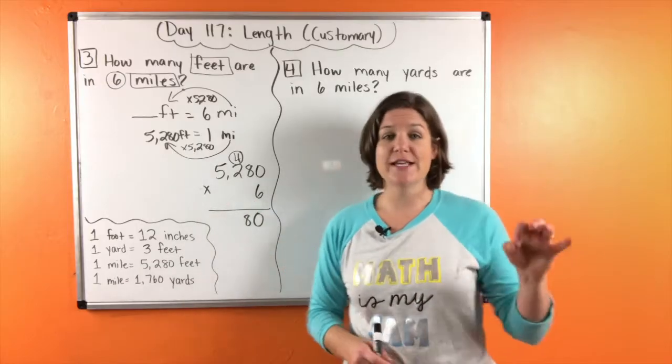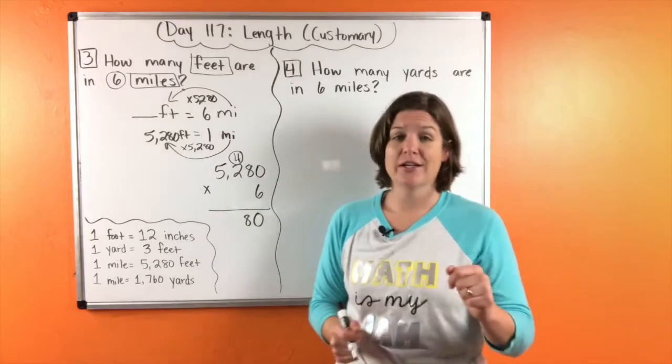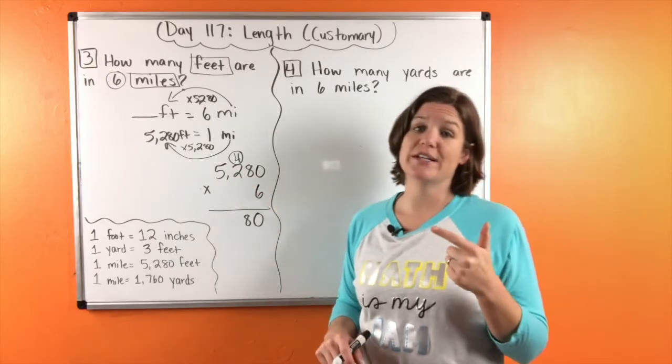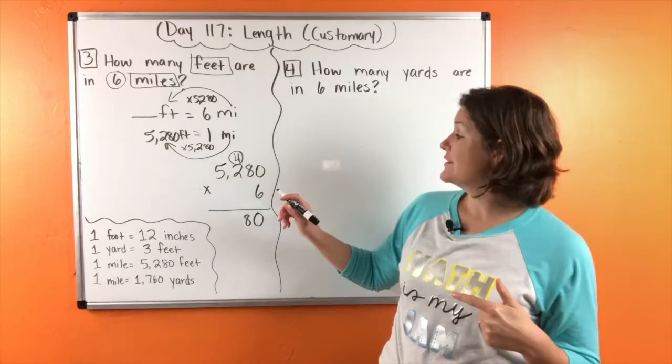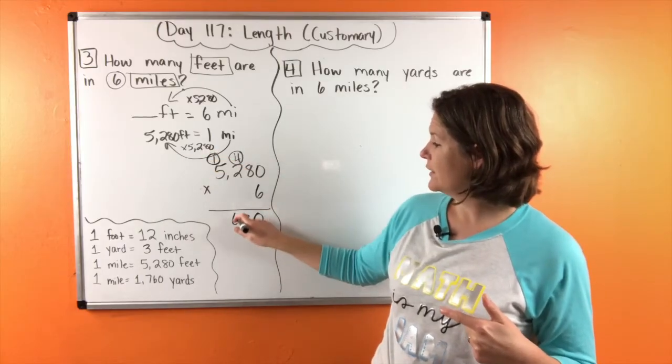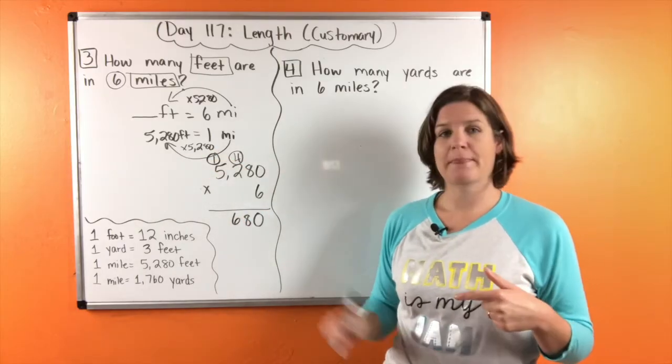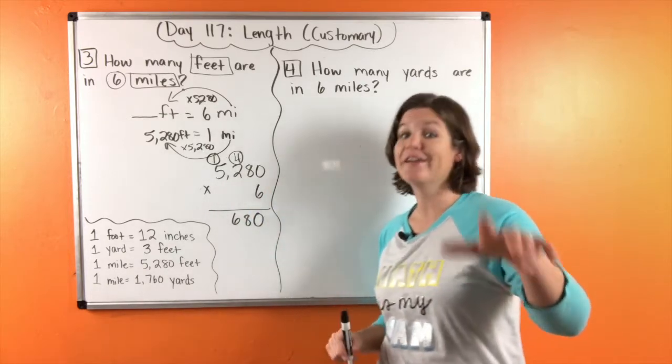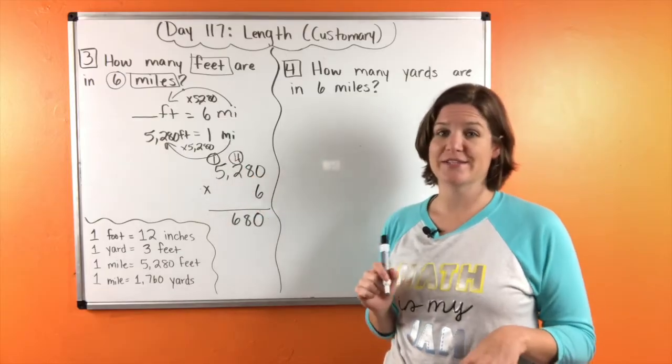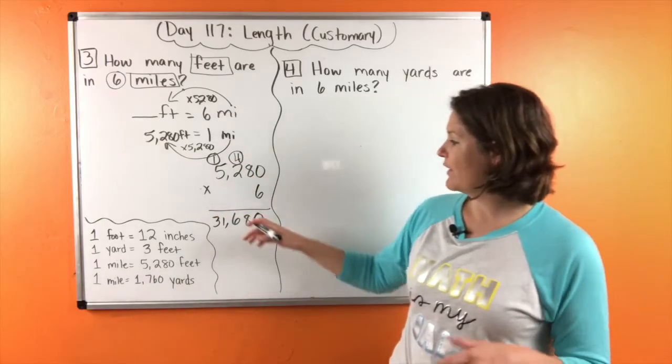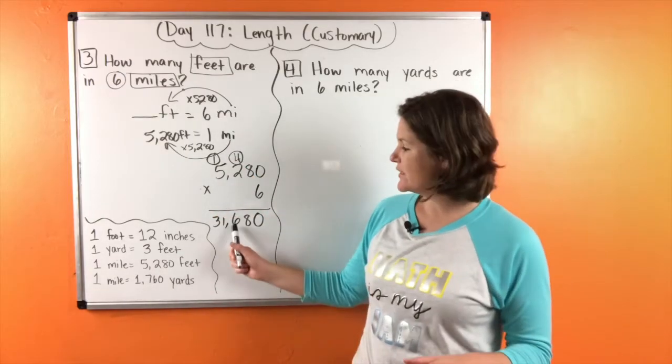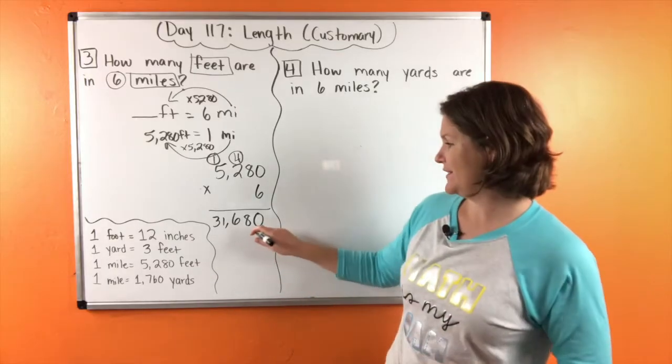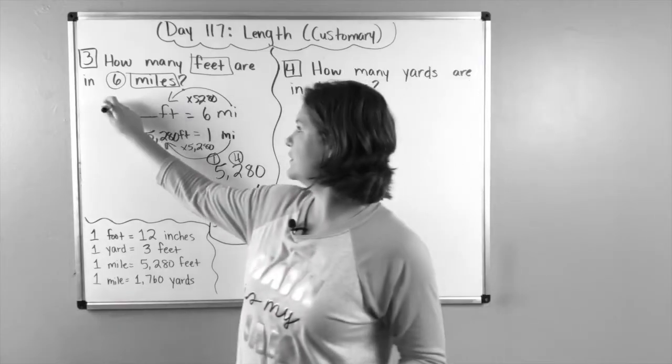Six times two is 12 and then 12 plus four is 16. Six times five is 30 and 30 plus one is 31. So we have 31,680 what? Feet. That's what we were trying to figure out.